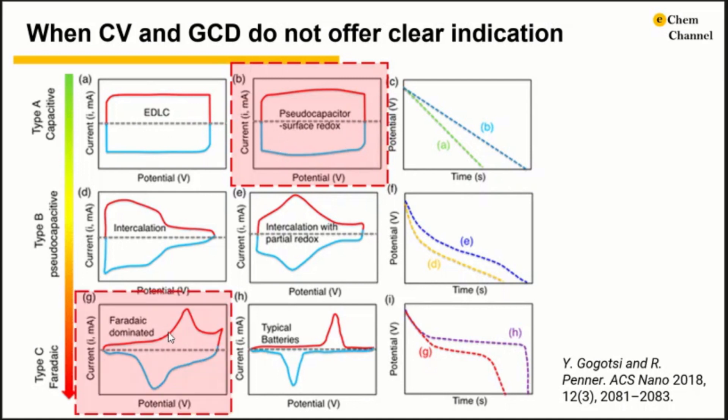You may also find a CV with combined characteristics of capacitive type and battery type. Then, what is the contribution of each mechanism at different potentials? This is why we need some extra methods to electrochemically understand the charge storage processes.